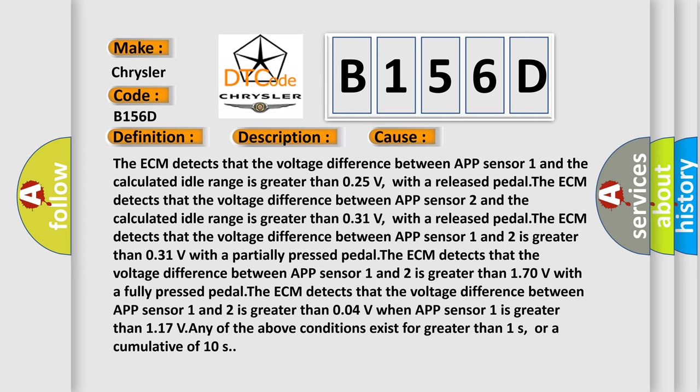The ECM detects that the voltage difference between APP sensor 1 and the calculated idle range is greater than 0.25V with a released pedal. The ECM detects that the voltage difference between APP sensor 2 and the calculated idle range is greater than 0.31V.